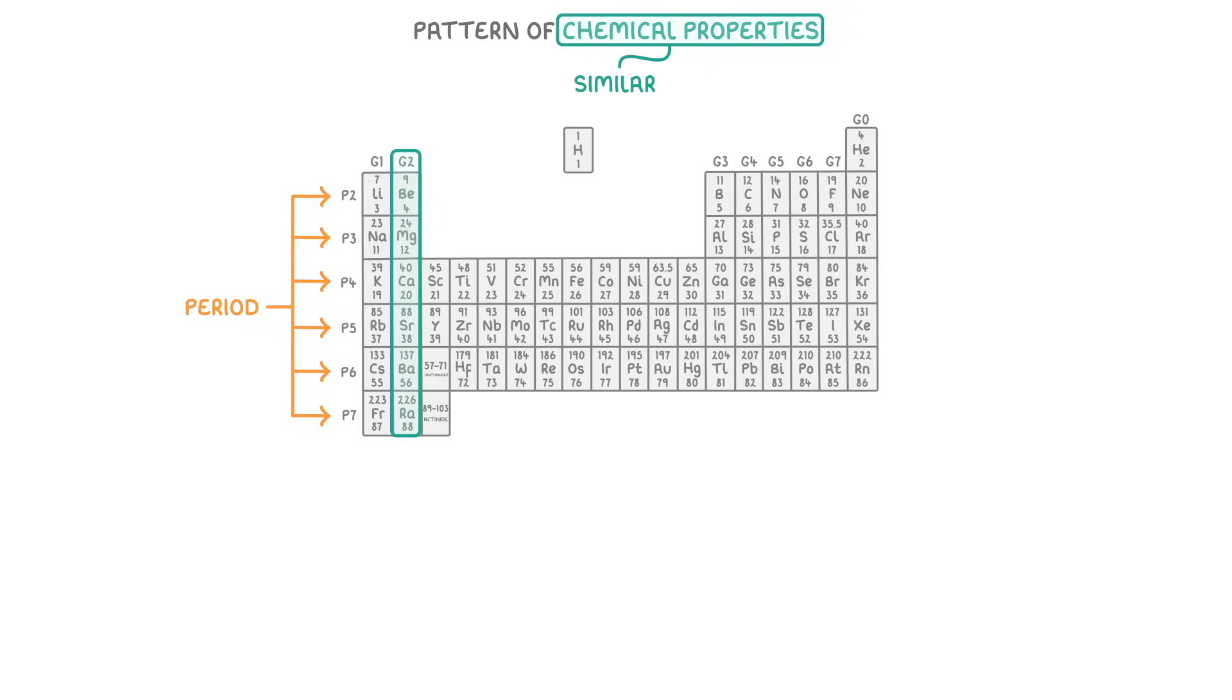We call each of these columns a group, starting with 1 on the far left and going to 7. So here we're looking at group 2. There are a couple of exceptions to this though. One is that the far right group is called group 0, rather than group 8, and we'll take a closer look at why this is in a minute. The other is that the block of metals between group 2 and 3 don't have group numbers. Don't worry about this for now though, just remember to ignore them when counting your groups.